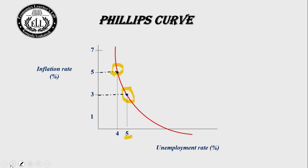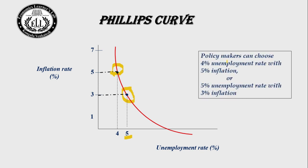Policymakers can choose between combinations. If they want to reduce unemployment, they can accept higher inflation. So policymakers can choose 4% unemployment rate with 5% inflation — that is this point — or 5% unemployment rate with 3% inflation — that is this point. The Phillips curve is showing an inverse relationship in this diagram.